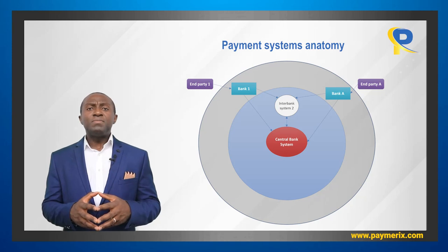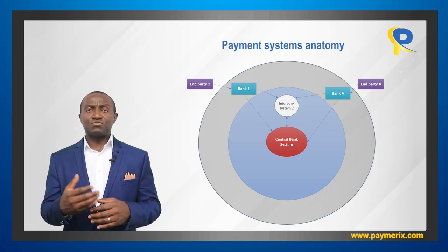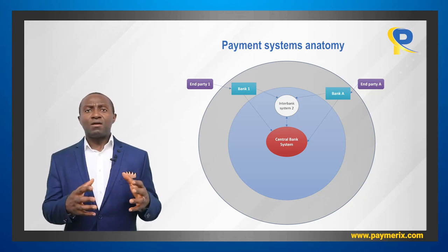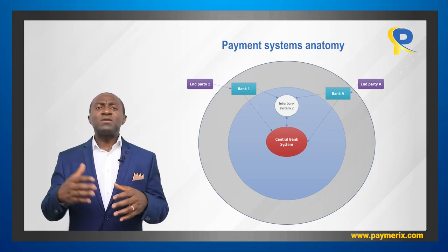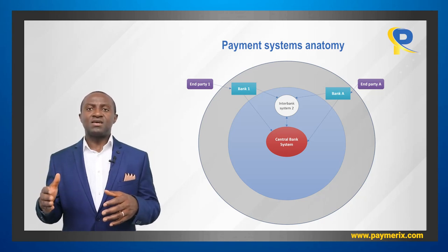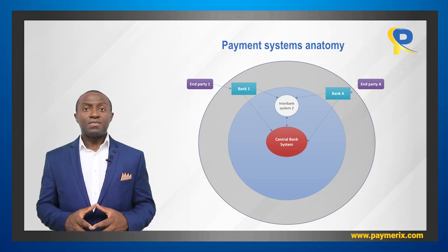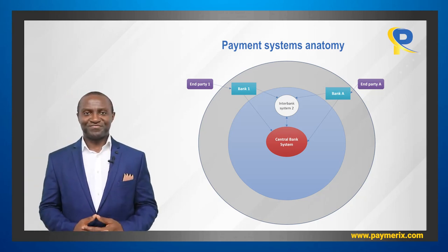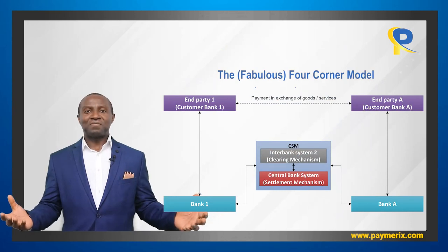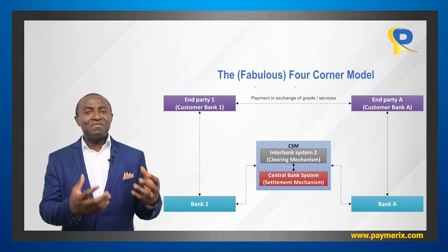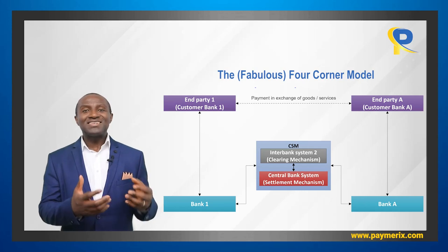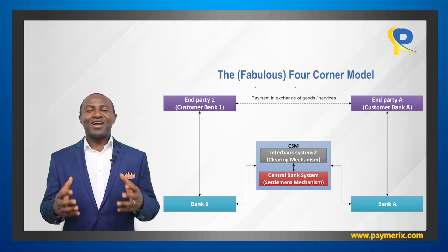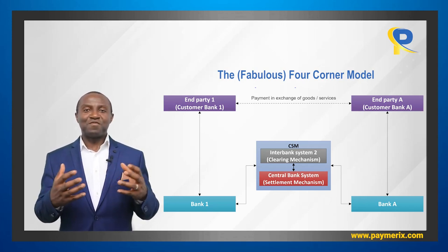Interbank system 2 may be used for the exchange of messages related to one or many payment instruments, and we keep it in our model because we are interested in payment message exchange through that interbank system specifically. Now let's make this model look more beautiful. Here is the result — the picture you see is called the four corner model. I call it even the fabulous four corner model.